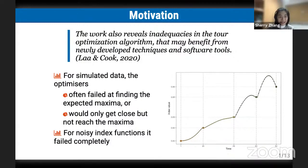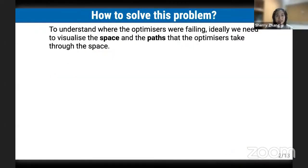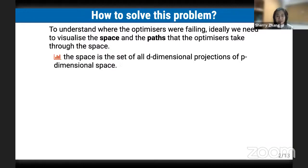They find that for simulated data, the optimizers often failed at finding the expected maxima or would only get close but not reach the maxima. For noisy index functions, it failed completely. This is an interesting visualization problem because the space is the set of all d-dimensional projections of p-dimensional space.